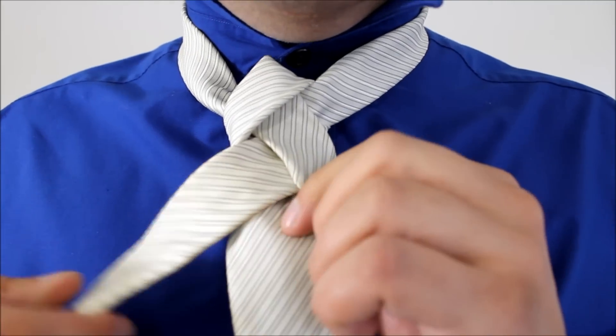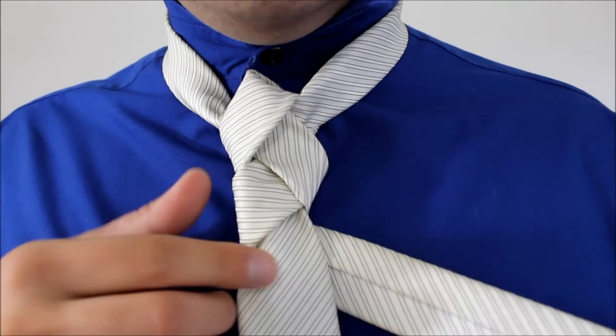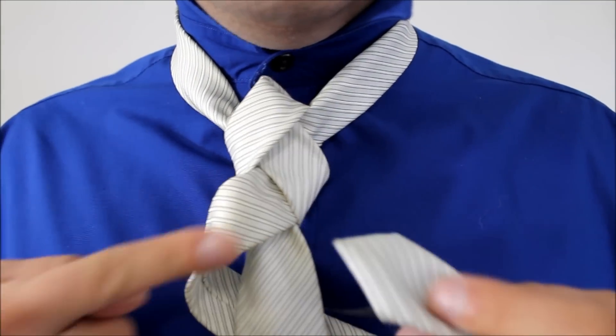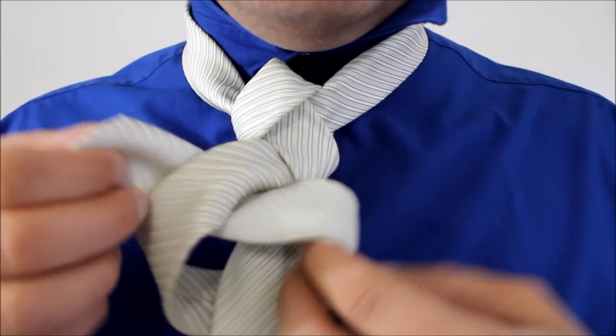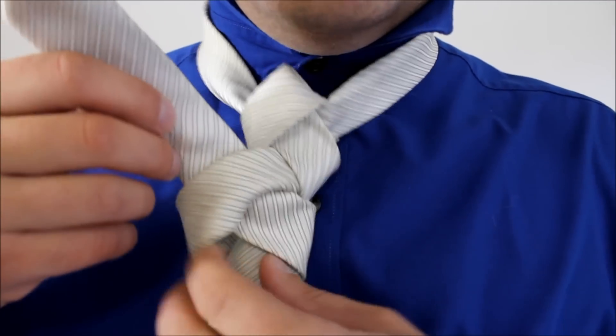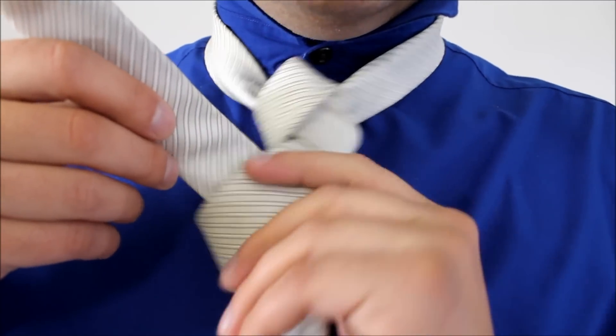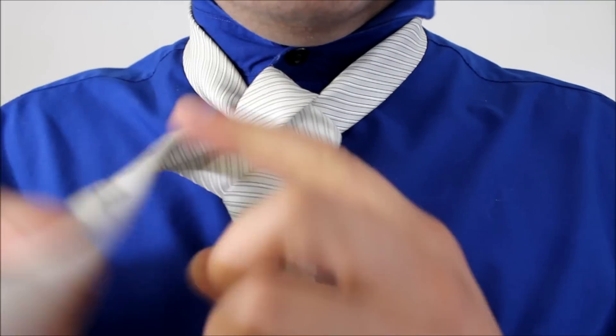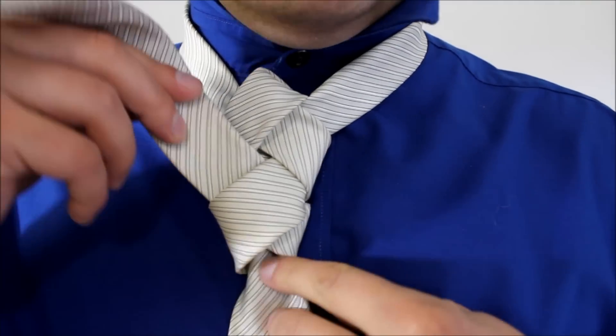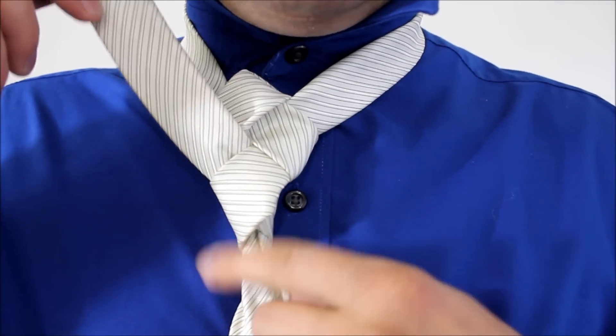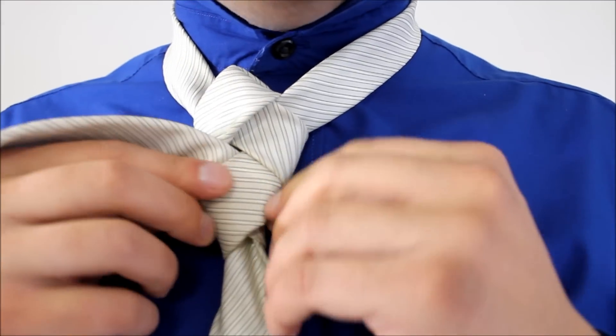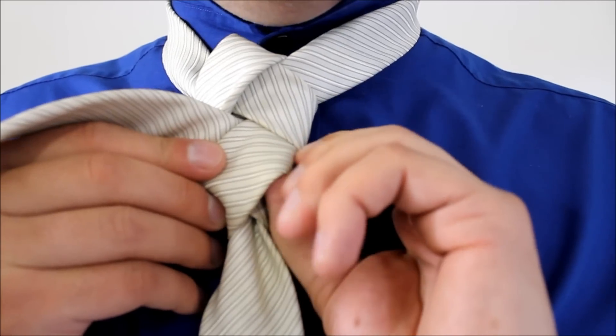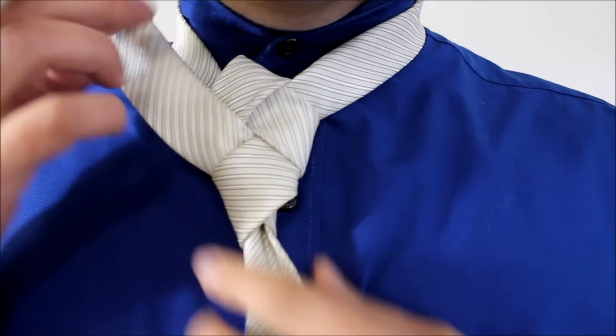Now taking the little end, we're going to bring it around the back, and we're looping underneath what we just made here, like so. So the top end is going to be showing above this front fold at the very beginning.